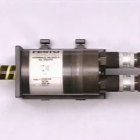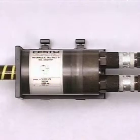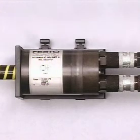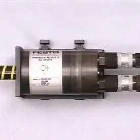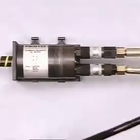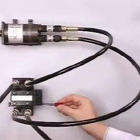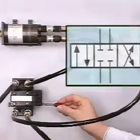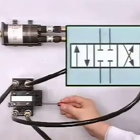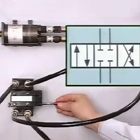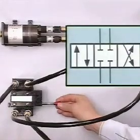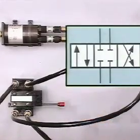A hydraulic motor can also be stopped and, of course, its direction of rotation changed. This is the circuit symbol for a four three-way valve with positive piston overlap.